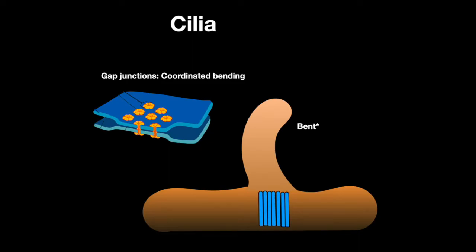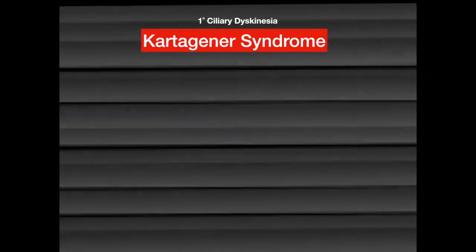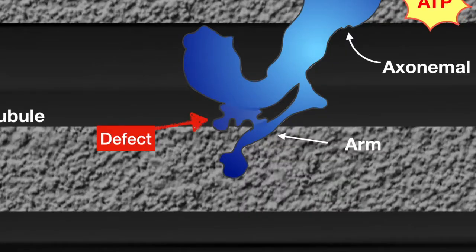Gap junctions allow cilia-coordinated movement. Kartagener syndrome, primary ciliary dyskinesia, is caused by immotile cilia due to a defect in the dynein arm.